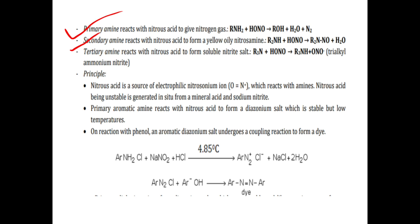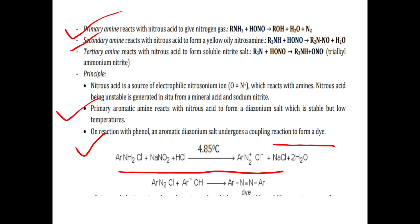Primary aromatic amines react with nitrous acid to form a diazonium salt, which is stable only at low temperature. The diazonium salt undergoes a coupling reaction with phenol to form a dye of green color. The diazonium chloride reacting with phenol gives this azo dye.